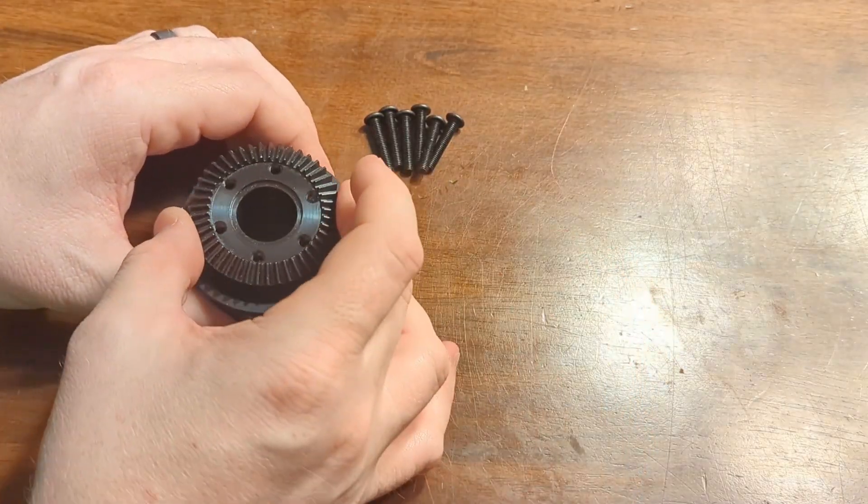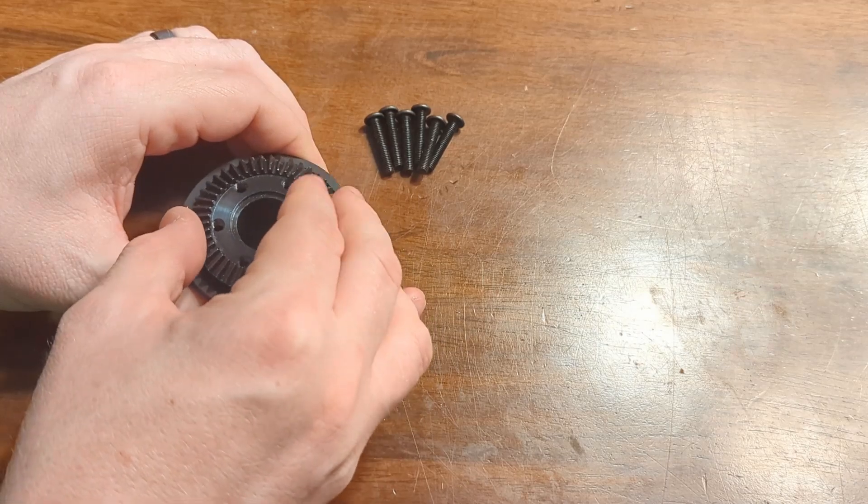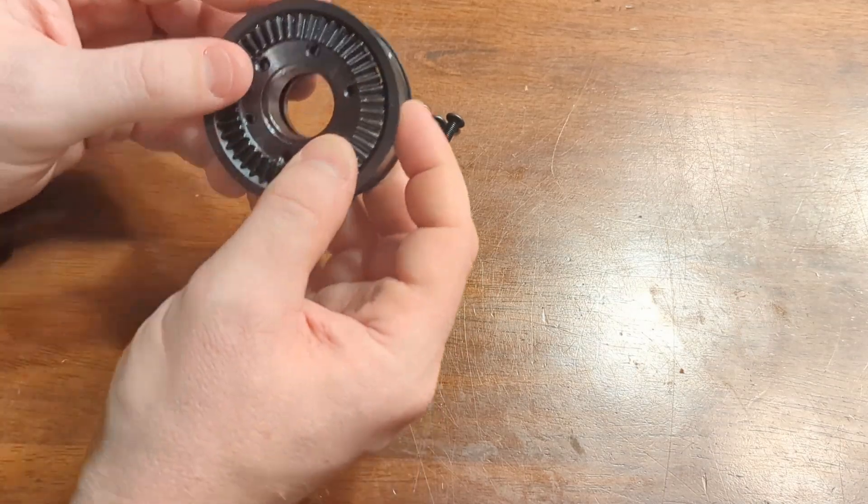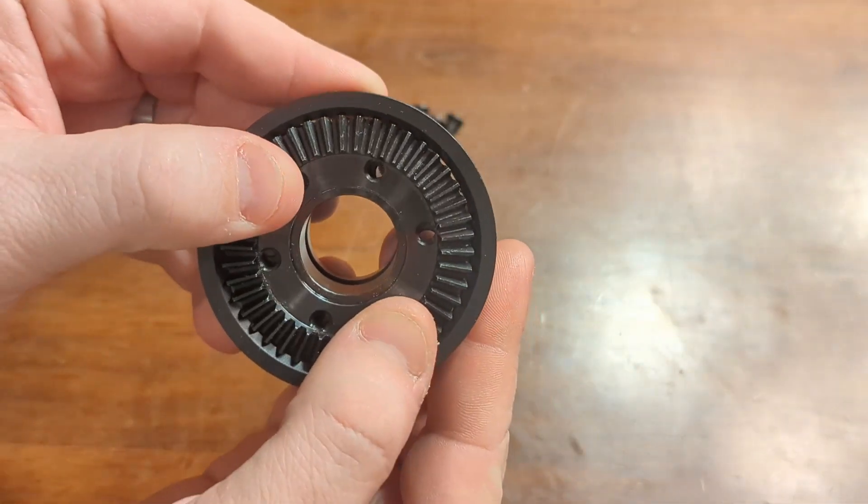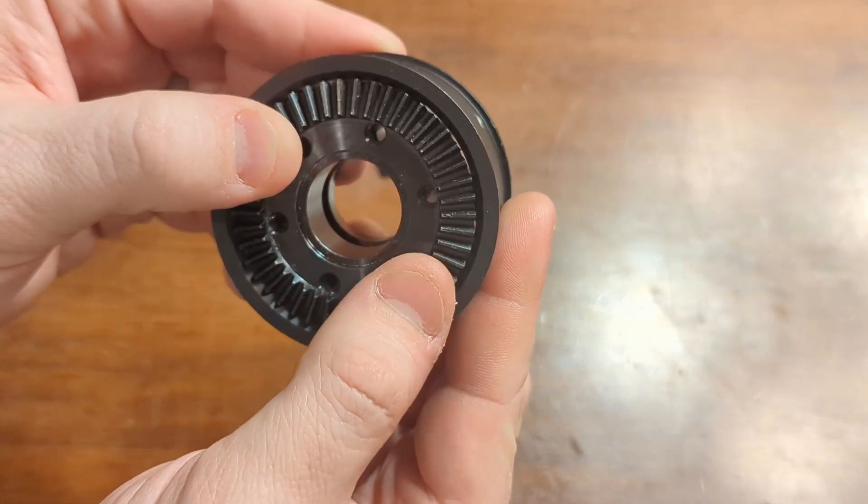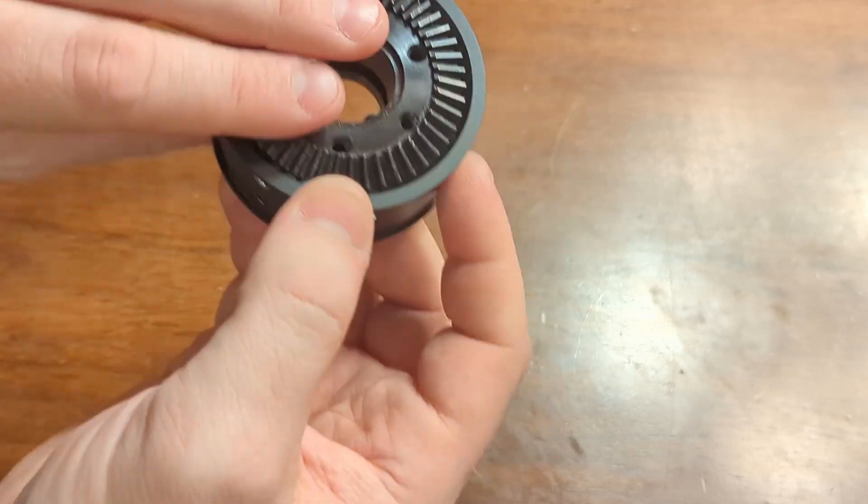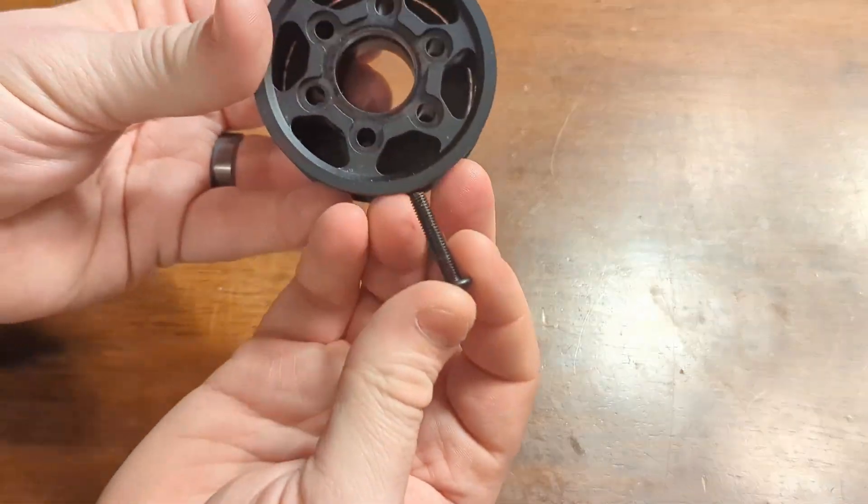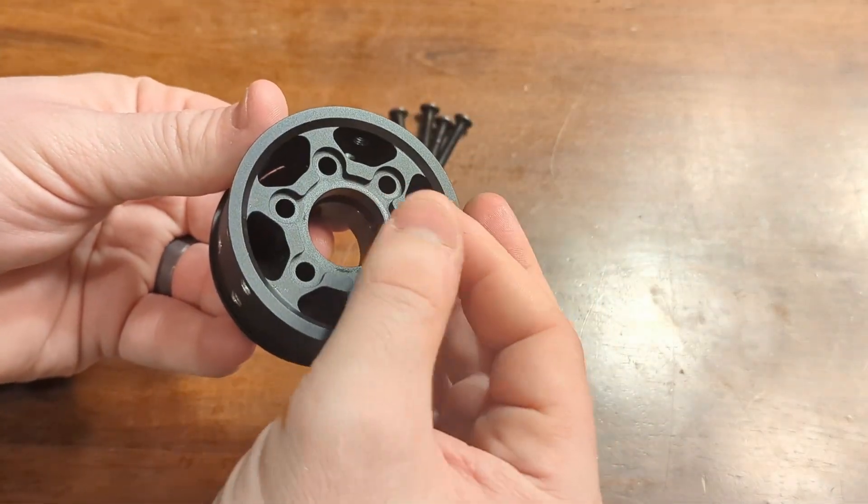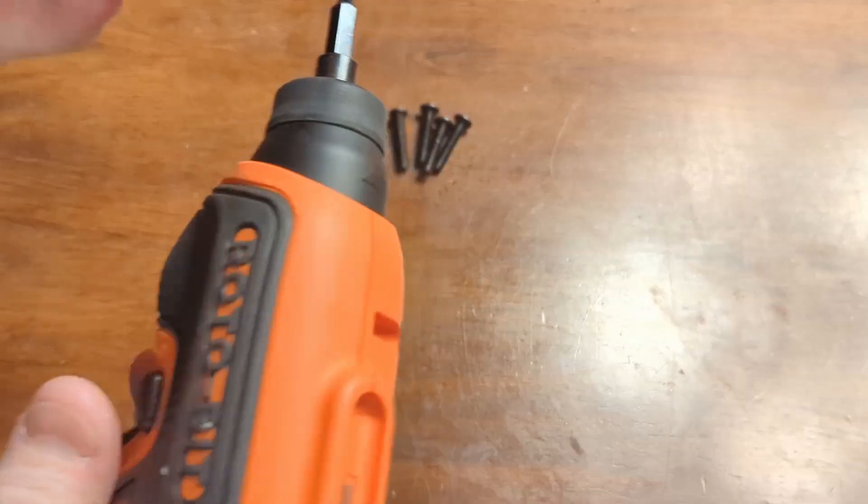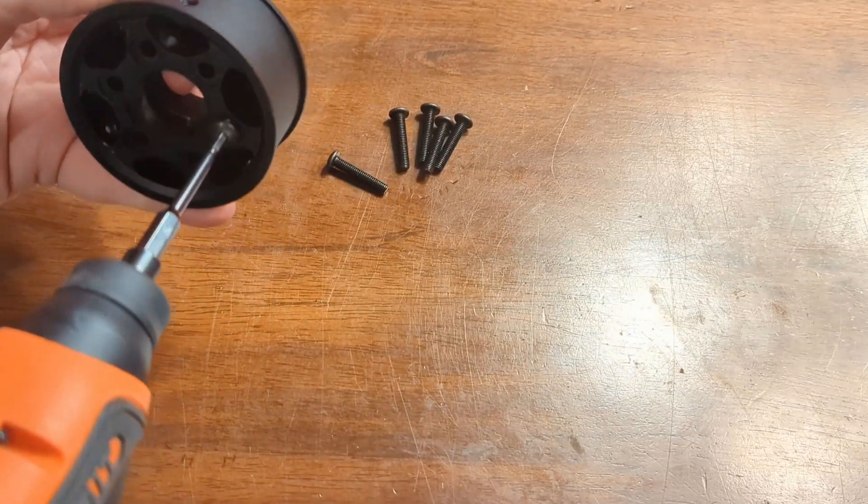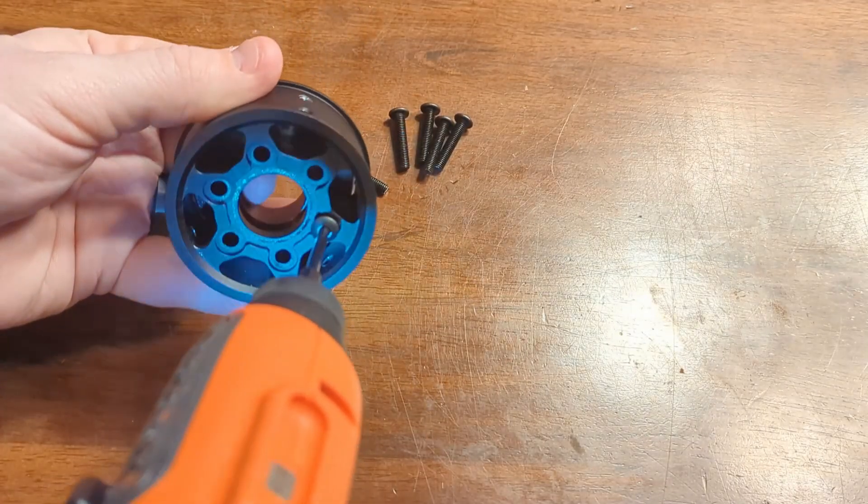Now we'll attach the bevel gear to the 3 inch swerve wheel. You'll want to line up the holes. Make sure the hole pattern lines up properly with it so that you can attach the six 1032 button heads through the wheel. You'll probably want to apply some Loctite to these bolts, but go ahead and attach those.